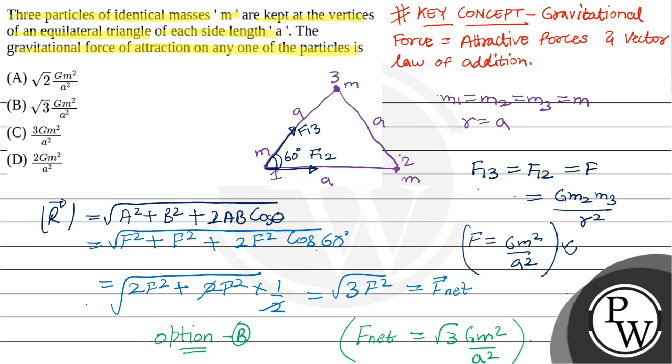So the correct answer is option B, that is force of attraction on any one of the particle in an equilateral triangle of side A is equal to root 3 GM square by A square.